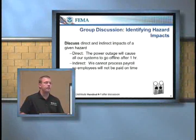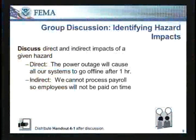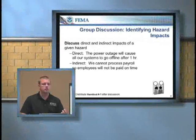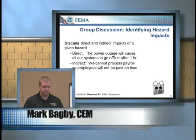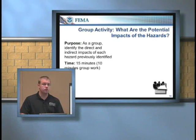Welcome back. So now we've identified a number of hazards. The next step we're going to do in groups is talk about direct and indirect impacts. For instance, a power outage as your hazard — the direct impact would be you lose power. If you're a retail establishment, that means you lose all your computers, your registers, you can't check any people out, you can't run any reports. Indirectly, you can't do payroll, you can't have people pay for items — so it's a rolling effect. Now I want you to take those hazards you identified in the first group activity and list some direct and indirect impacts for each.